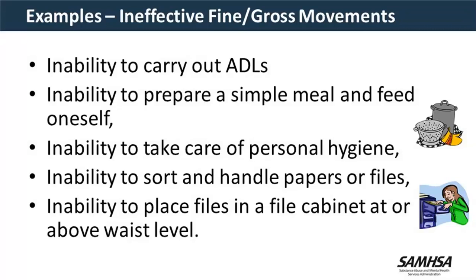When looking at loss of function in the upper extremities, we're looking at their ability to carry out their ADLs. Can they take care of their personal hygiene? Do they have difficulty with dressing, such as buttoning their clothes or tying their shoelaces? Is their ability to handle papers, files, or even writing affected? If a claimant writes out their own ADLs, we look at whether it is legible. These are some of the things we observe to determine the severity of the impairment affecting their hands.